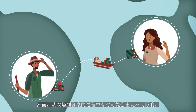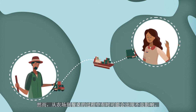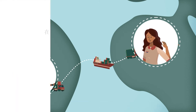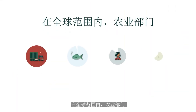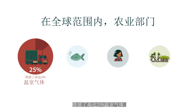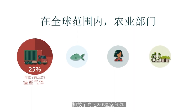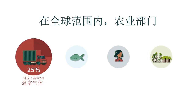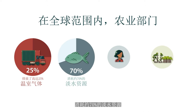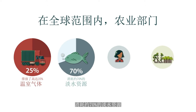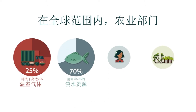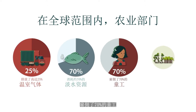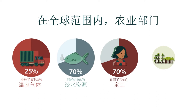However, at times there can be harmful impacts along the way that can take place from the farm to your table. Globally, the agricultural sector contributes up to 25% of all greenhouse gas emissions, uses approximately 70% of freshwater resources, and accounts for 70% of child labour.